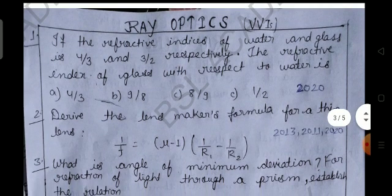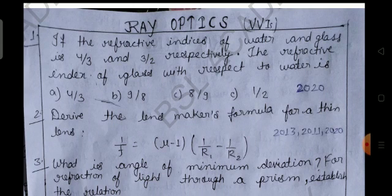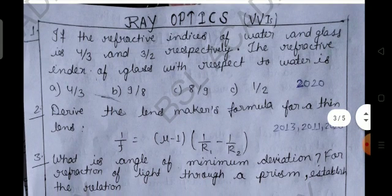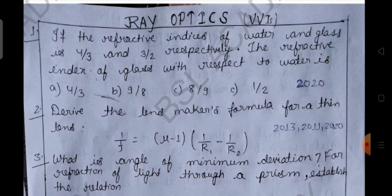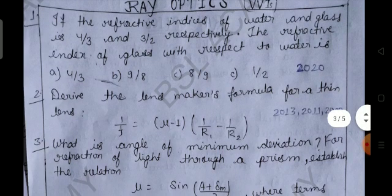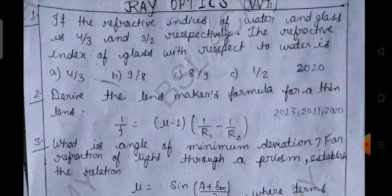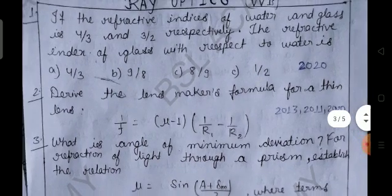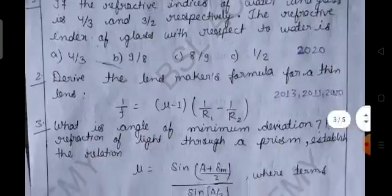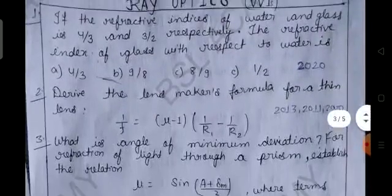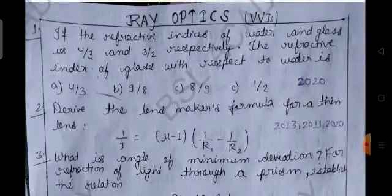Question number one: If the refractive indices of water and glass is 4/3 and 3/2 respectively, the refractive index of glass with respect to water is: option a) 4/3, option b) 9/8, option c) 8/9, or option d) 1/2. Please comment the answer. This has been asked in 2020.